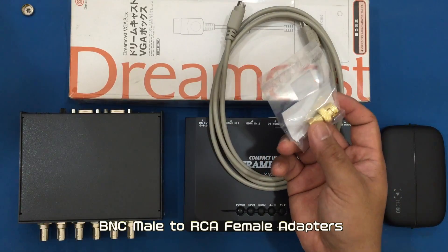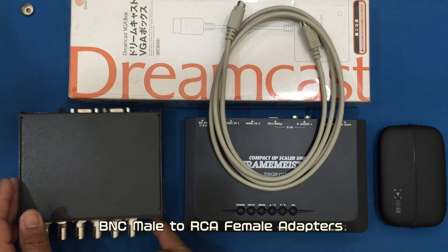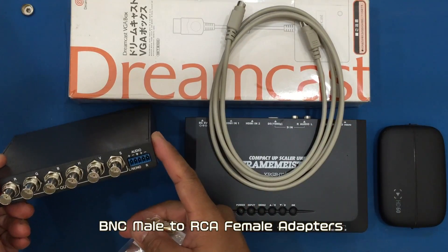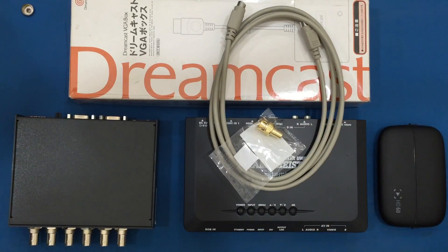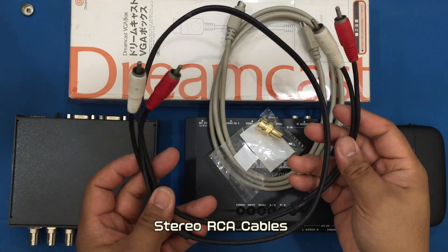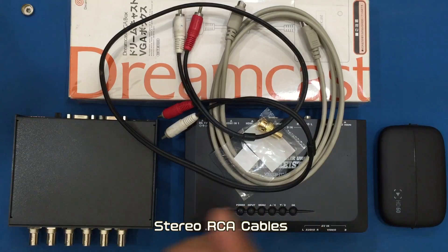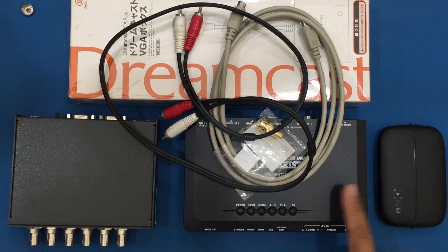Some BNC to RCA jacks to convert the BNC jacks from the RGB interface to RCA so we can use standard audio RCA cables to get the signals from the RGB interface over to the Framemeister.